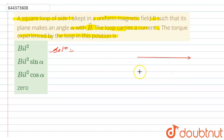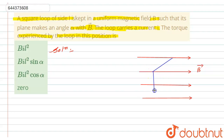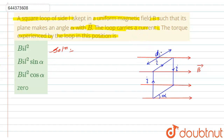Let us assume we have a magnetic field in this direction, as shown by the arrow. Into this magnetic field, we have kept a current-carrying square loop in such a way that it makes an angle of alpha with respect to magnetic field B. This loop is carrying a current of I, and the side of the square is l.